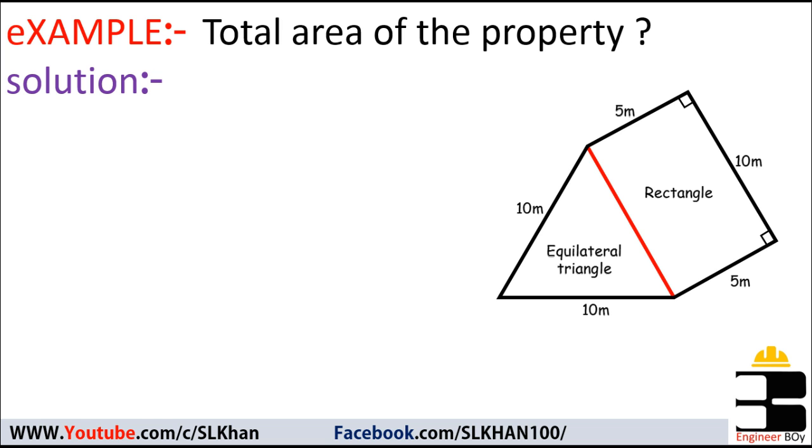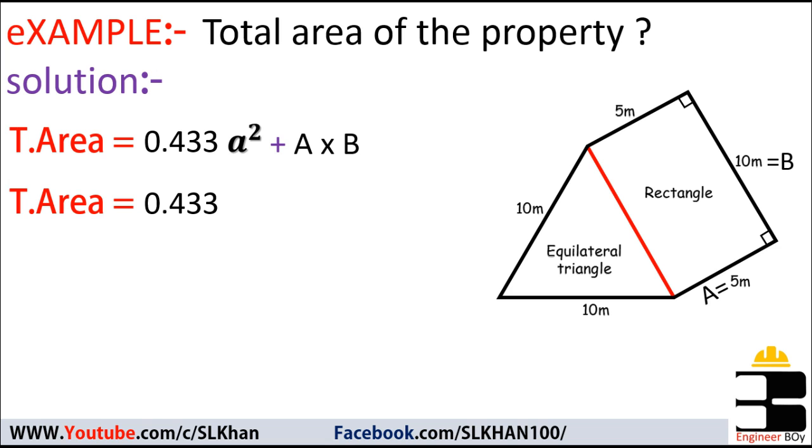That means the total area of the property is going to be area of the triangle, which is an equilateral triangle, and that is 0.433 a square, plus area of the rectangle, which is a cross b. And these are the base and its height. So area of the property equals 0.433 times a square, which is 10 here, so 10 square plus a which is 5 times b which is 10. And that's it. Just by doing little math with these guys, we can get area equals 93.30 square meters.